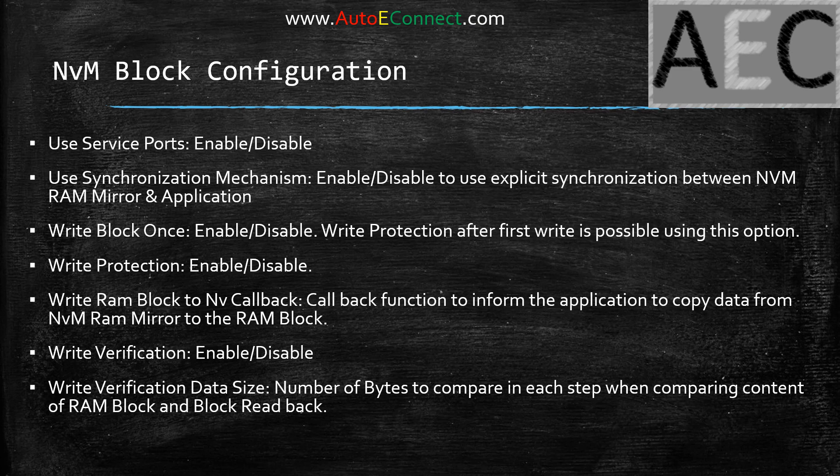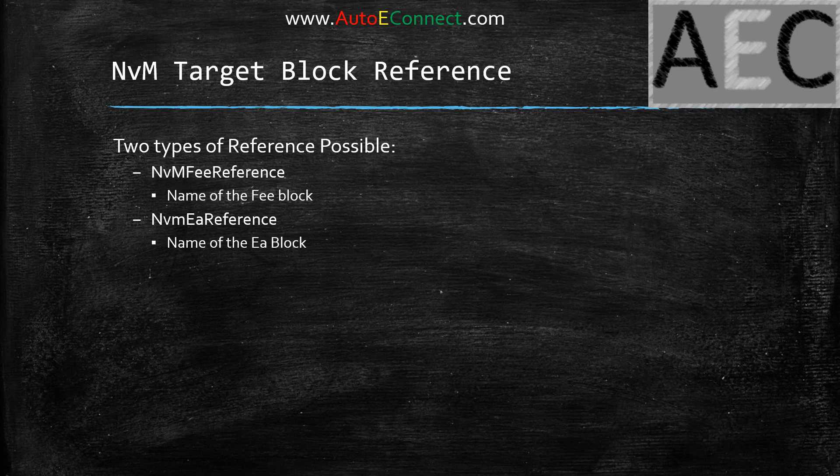Write RAM Block to NV Callback: a callback to inform the application to copy data from the NVM RAM mirror to the RAM block when using explicit synchronization. Write Verification: enable or disable per block — when enabled, after writing data, NVM reads it back to verify the write succeeded. You also need to specify the number of bytes compared per comparison cycle between the RAM block content and the read-back block.